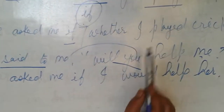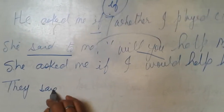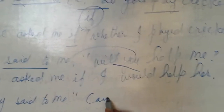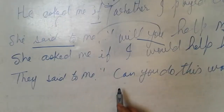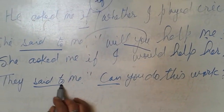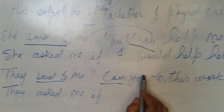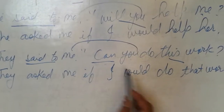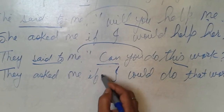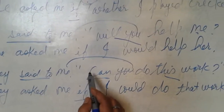He asked me if I played cricket. Now the third sentence: they said to me, 'Can you do this work?' As you know, 'can' changes into 'could'. So you write: they asked me if I could do that work. The simple rule applies here — you write 'if' or 'whether' and change the sentence, applying the tense change rules.